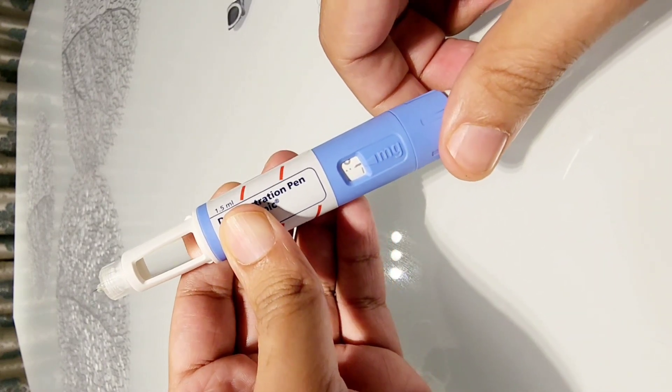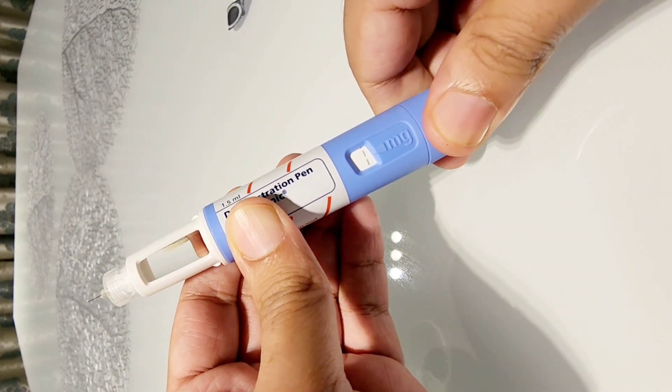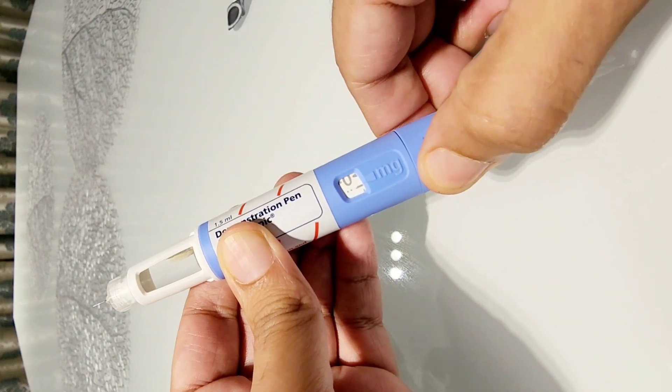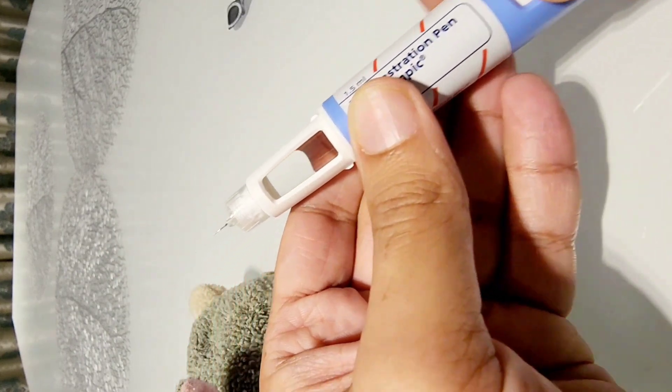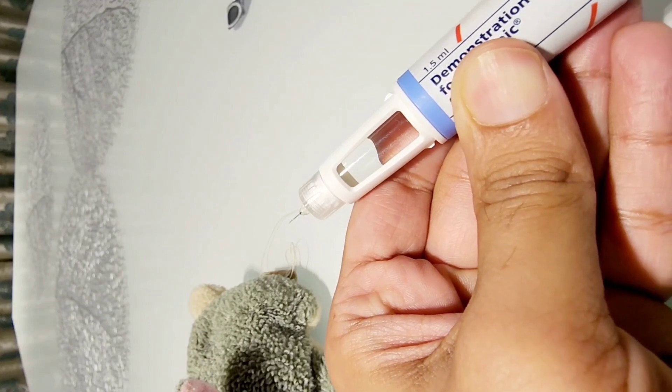So there is a small mark here as you can see before this segmented line comes. This is between zero and this mark here. This is a test dose. So you can actually do a test dose and make sure that there is a drop coming up.